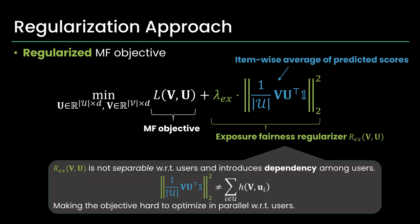However, this fairness regularizer inherently introduces dependencies among users. Formally, the squared norm of averages across users is not separable in the form of a sum of user-independent functions. Consequently, parallel optimization for individual users becomes as challenging as it is in existing fairness-aware methods.